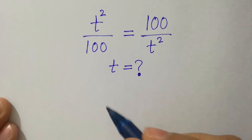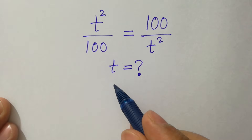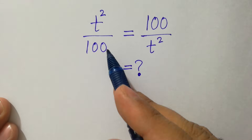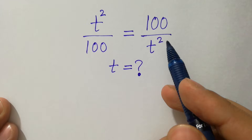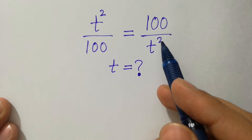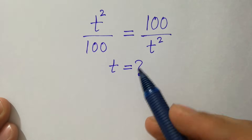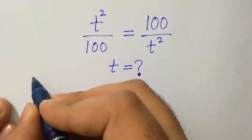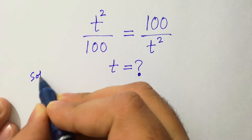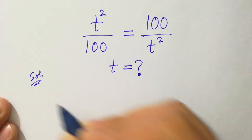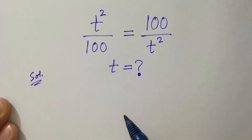Hello friends. Find the value of t if t square over 100 equal to 100 over t square. Let's have a solution. This problem can be solved by cross multiplication.